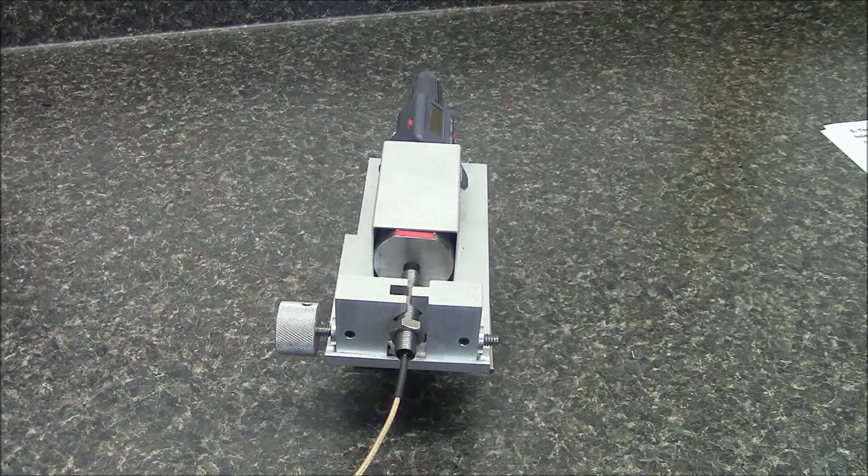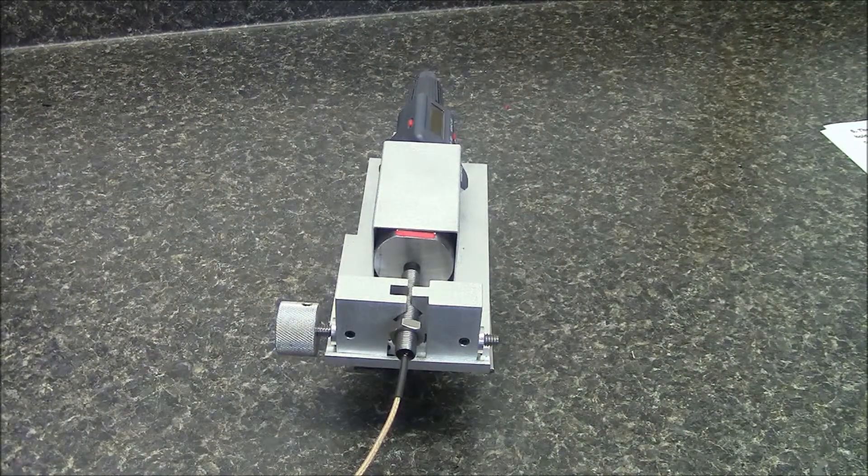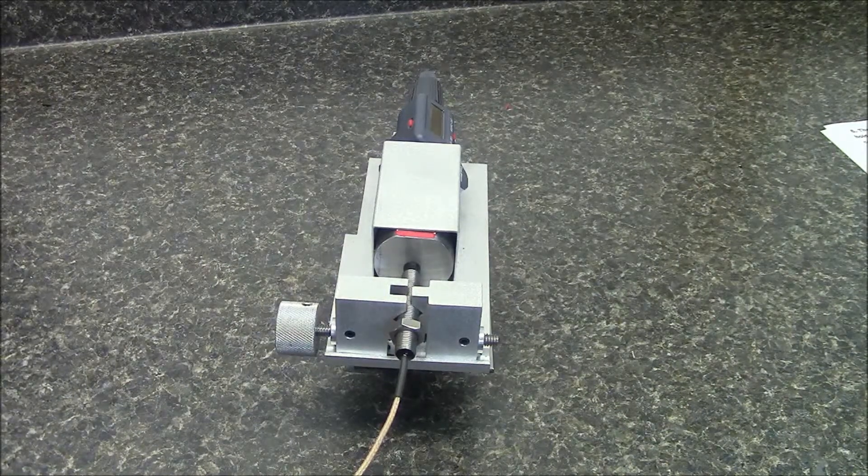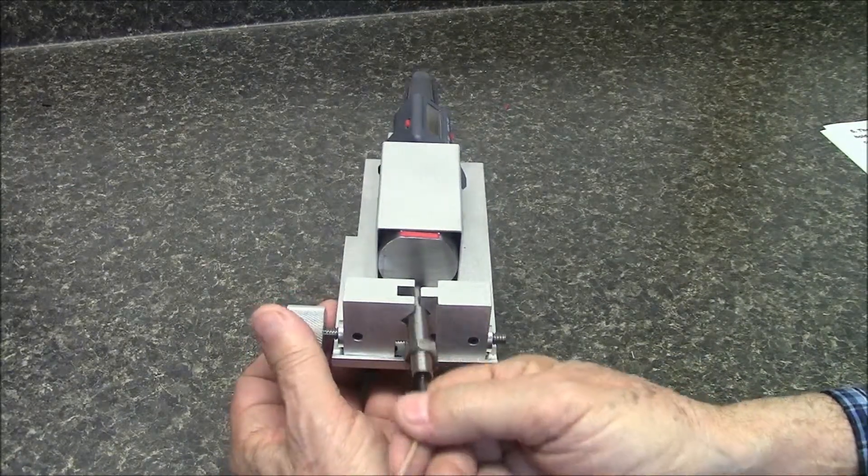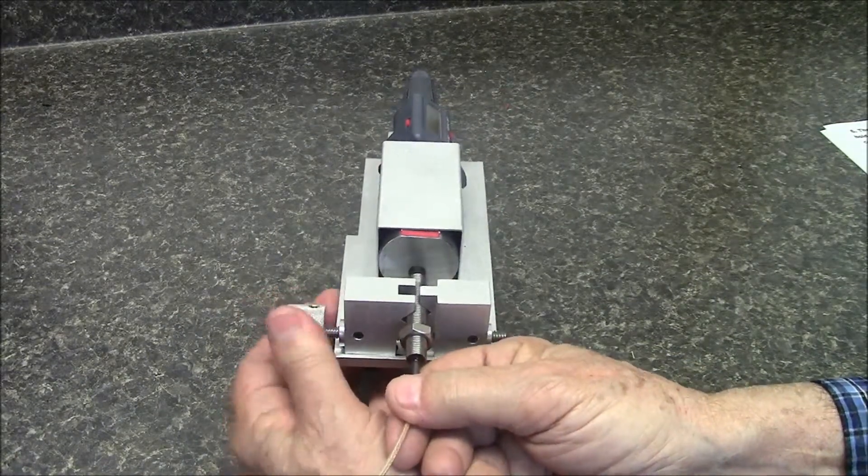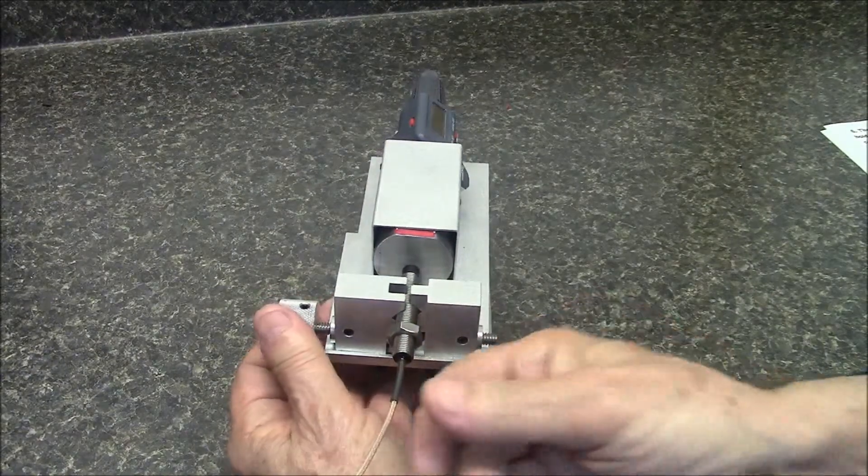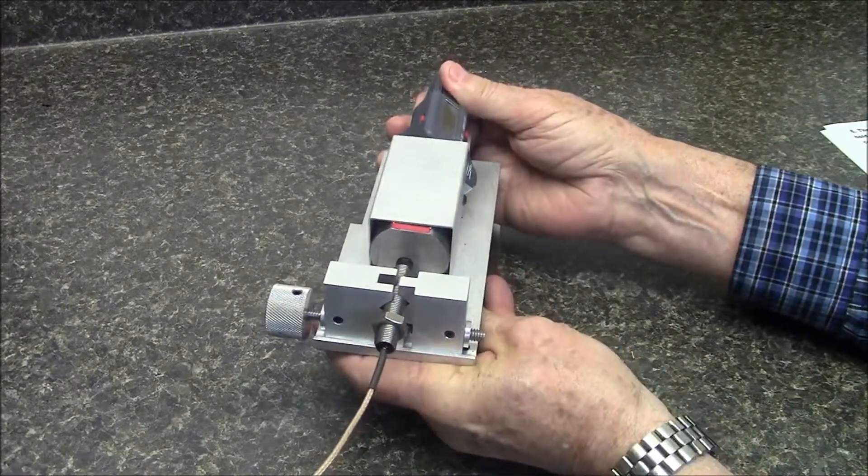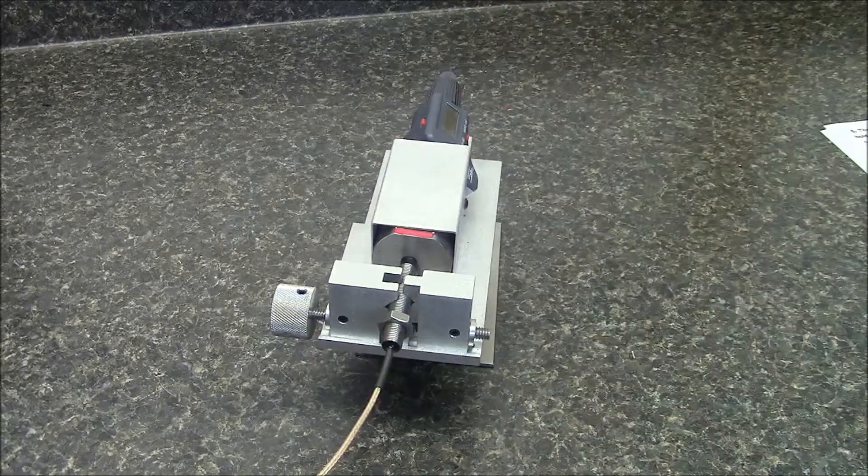The proprietary universal probe grippers will hold any diameter probe up to three-quarters of an inch. No more collets or interchangeable probe holders required. I loosen the knob, I can now move it out, I turn in clockwise direction to lock it in place. Then I would go ahead and move this up against the surface of the probe, lock that in place and I am set to go.